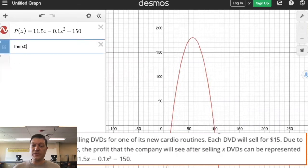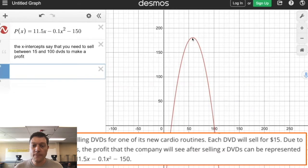Question one: a fitness company is selling DVDs and they're able to determine their profit formula according to this quadratic 11.5x minus 0.1x squared subtracted by 150.